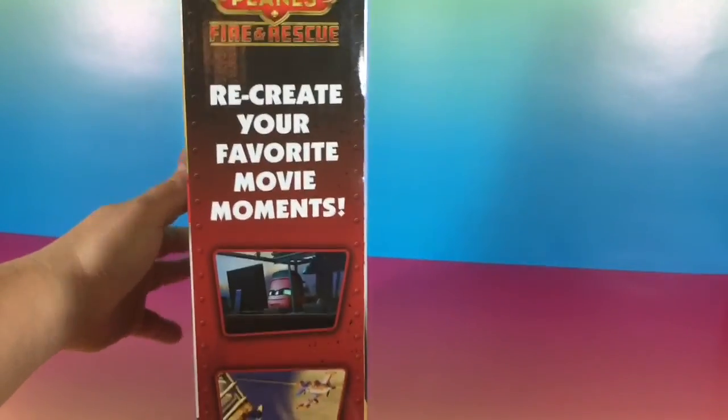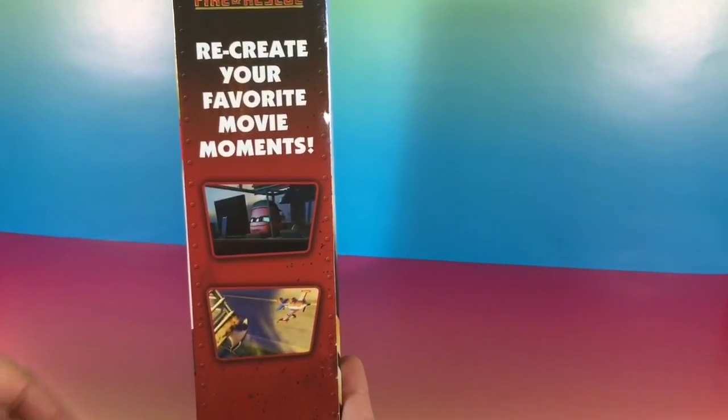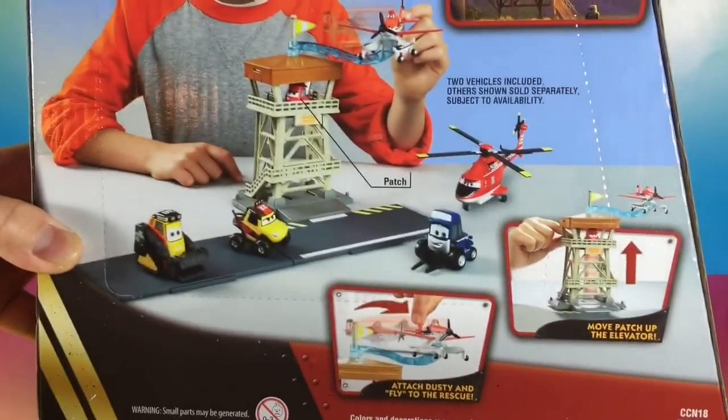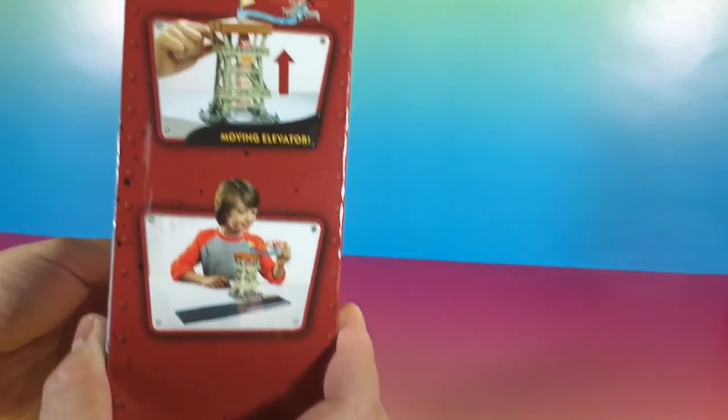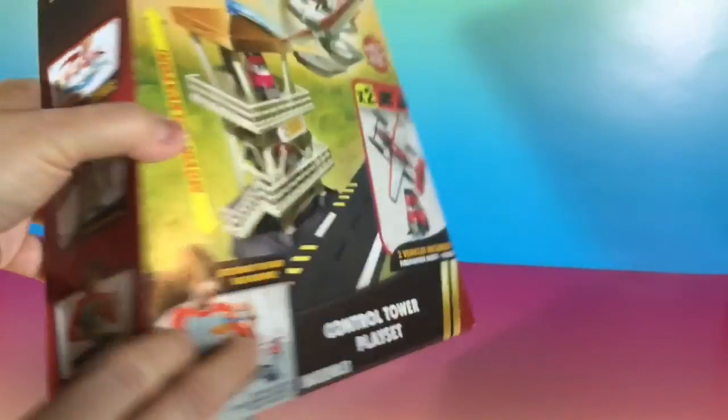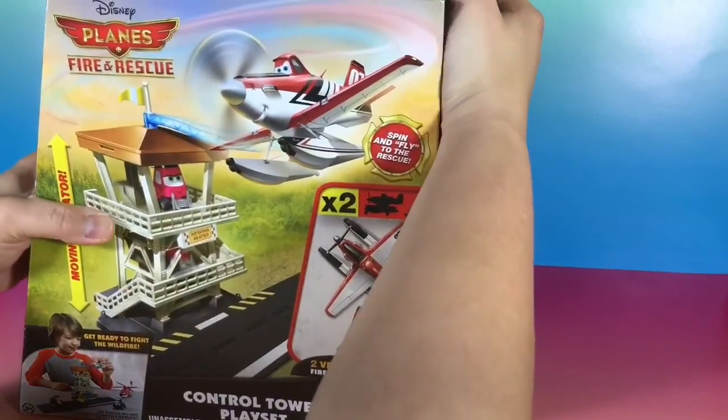The one we have here is the control tower playset. Now this one actually comes with only two characters - the tower as well as the landing strip, but it just comes with Dusty as the firefighter and Patch. Now on this picture you'll see a couple of other characters, but they don't come with them. So just to let you know, it doesn't come with Dynamite, or Drip, or Maru, or Blade Ranger, so just be aware of that when you decide to pick this up. But let's go ahead and take a look at this.